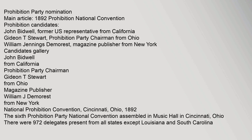The sixth Prohibition Party National Convention assembled in Music Hall in Cincinnati, Ohio. There were 972 delegates present from all states except Louisiana and South Carolina. Prohibition candidates included John Bidwell, former U.S. Representative from California; Gideon T. Stewart, Prohibition Party Chairman from Ohio; and William Jennings Demarest, Magazine Publisher from New York.